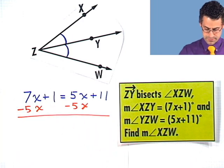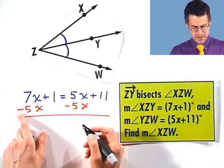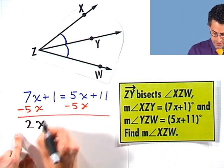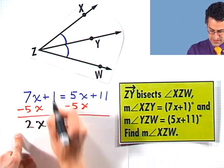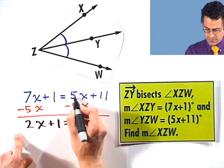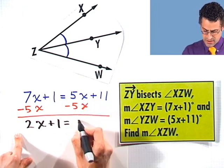And when I do that, here I have 7X's minus 5X's, so I just have 2X's left over. I still have that plus 1. I haven't done anything with that. And that will equal 5X minus 5X is 0, but I still have that 11.